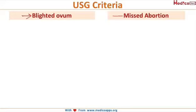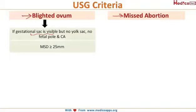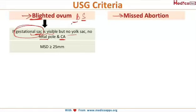On ultrasound, this type of abortion can be of two types: blighted ovum or missed abortion. These are two different terms. Coming to the blighted ovum first — if the gestational sac is visible but you do not have the yolk sac, fetal pole, or cardiac activity, it is called a blighted ovum. The only structure visible is the gestational sac. Remember it as 'BS' — blighted ovum if only the sac is visible.